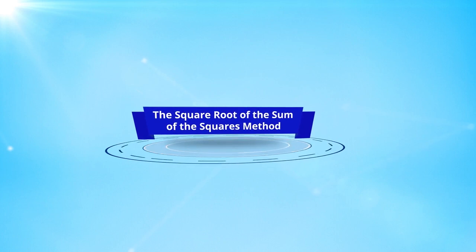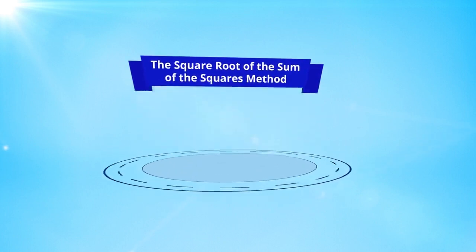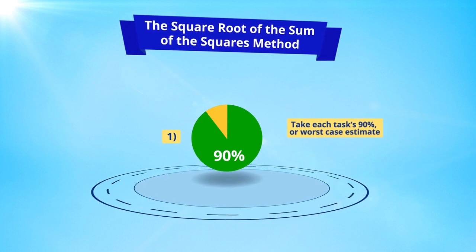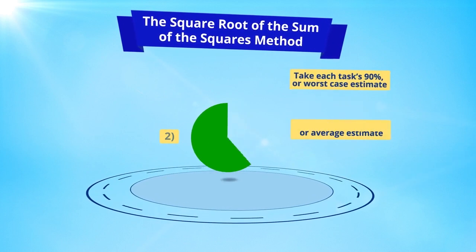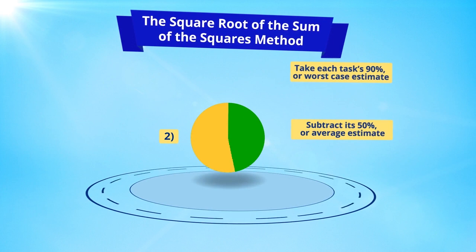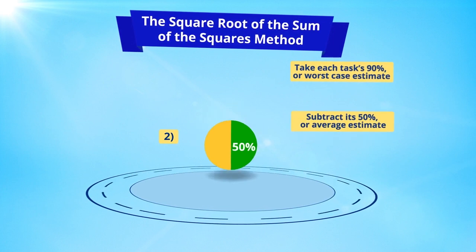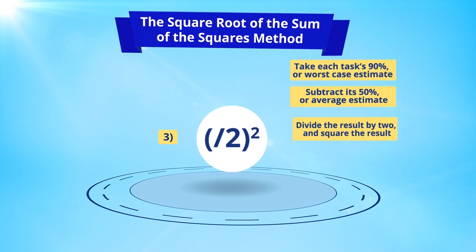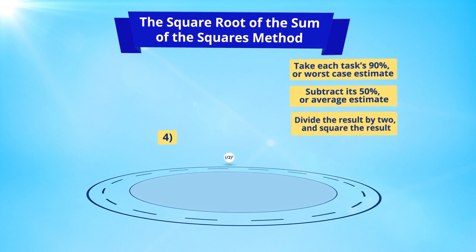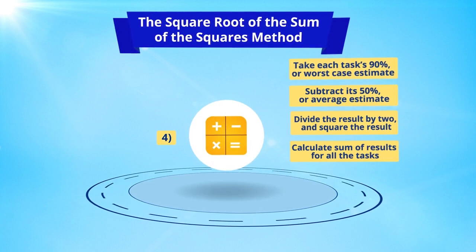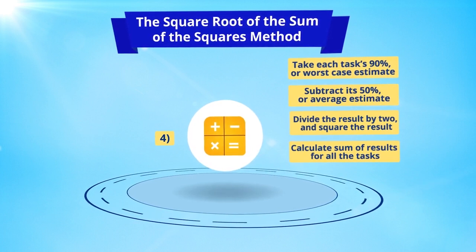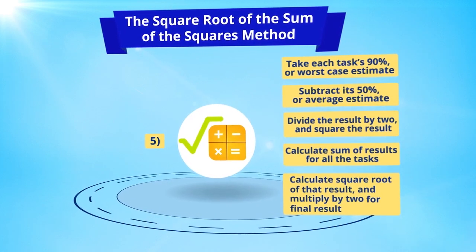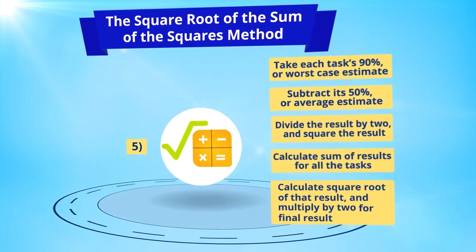To calculate the square root of the sum of the squares method: first, take each task's 90% or worst-case estimate. Next, subtract its 50% or average estimate. In the third step, divide the result by 2 and square that result. In step 4, calculate the sum of the results for all the tasks. Finally, the fifth step is to calculate the square root of that result and multiply by 2 for the final result.